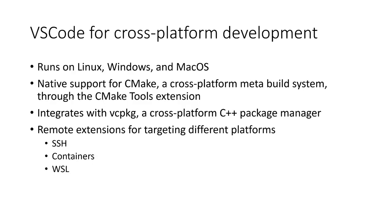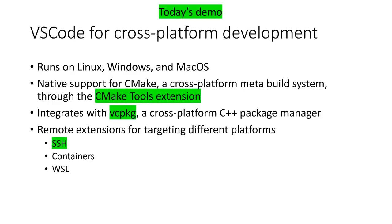VS Code also integrates well with vcpkg, and vcpkg works across all platforms. So if you're using CMake and vcpkg in your project, that sets you up to configure your project easily in VS Code across Windows, Linux, and Mac. VS Code also enables targeting different platforms through remote development extensions — the SSH extension, the Containers extension, and the Windows Subsystem for Linux extension. In today's demo, I'll show how to use the CMake Tools extension to configure, build, and debug CMake projects, how I integrated vcpkg with CMake Tools to manage all of SuperTux's dependencies, and then use the remote SSH extension to SSH into my Linux VM to show it works the same on Linux using GCC and GDB.